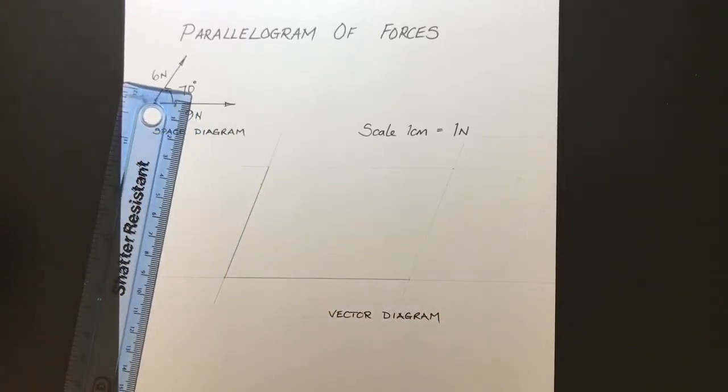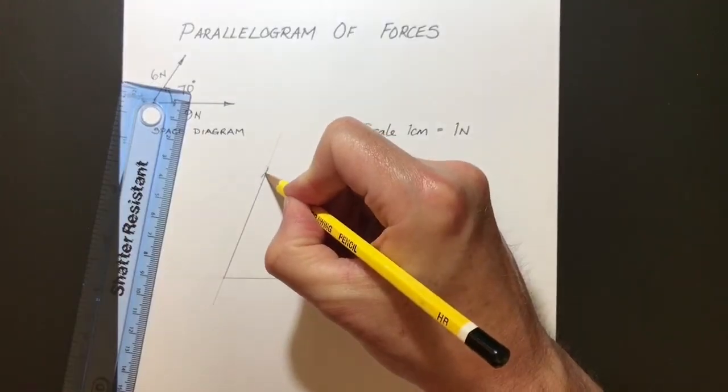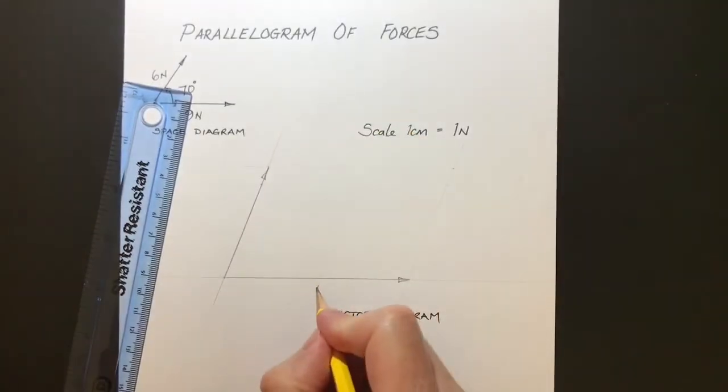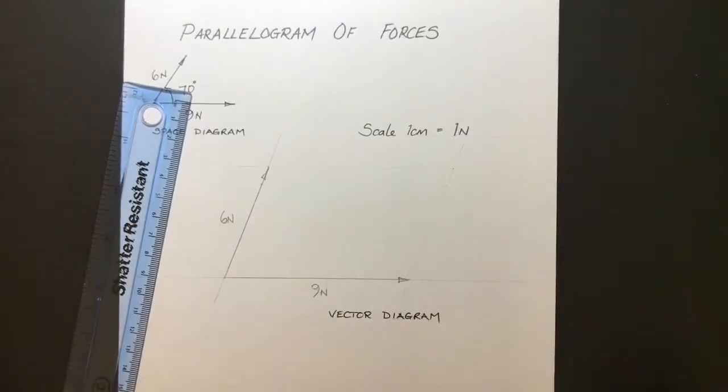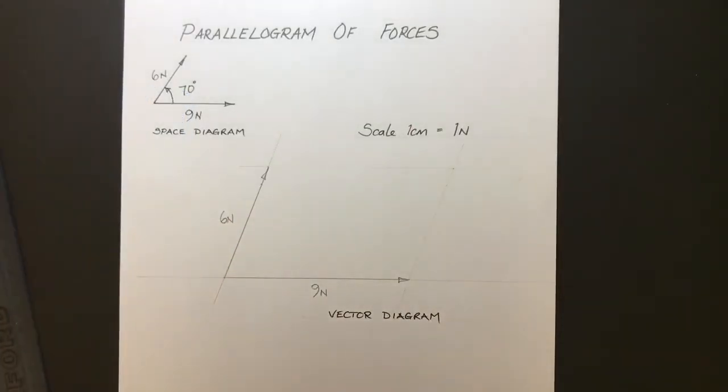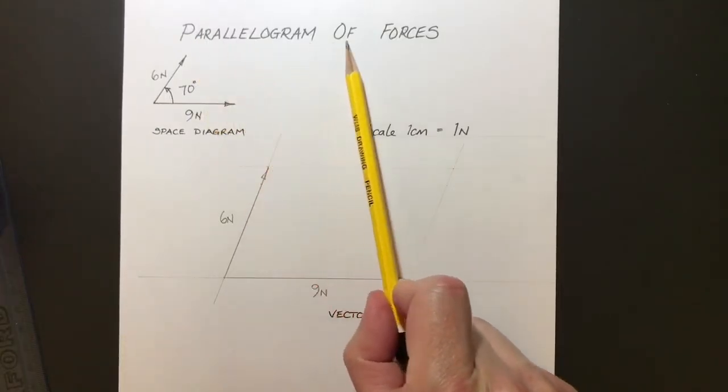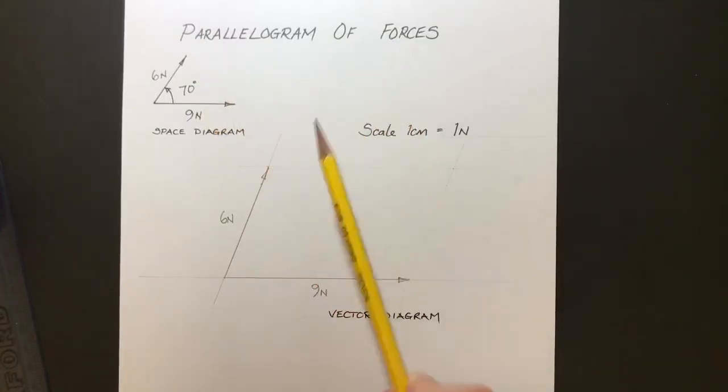So there we have our two vectors. There we have our nine Newton vector acting in that direction. And our six Newton vector up there. There's nine Newtons, six Newtons there. Now, as the name suggests, it's a parallelogram of forces. So we need to change this into a parallelogram. So to do that, we'll start with this line here, six Newtons. And we want to create a line that's parallel to that.